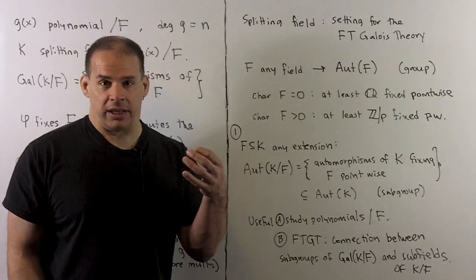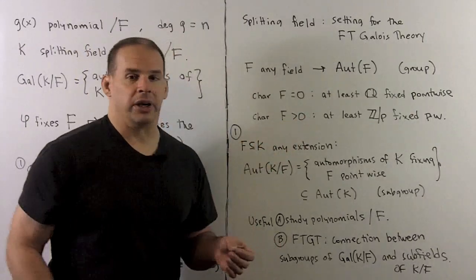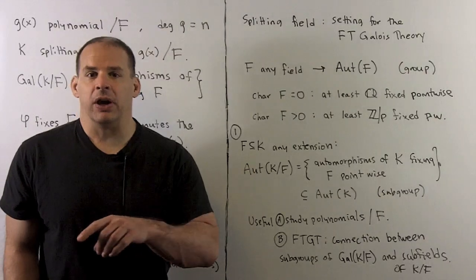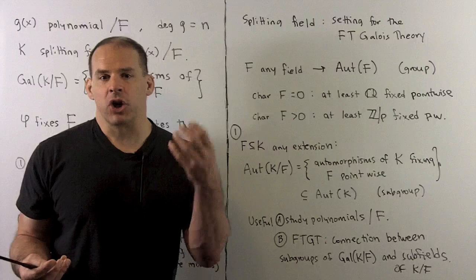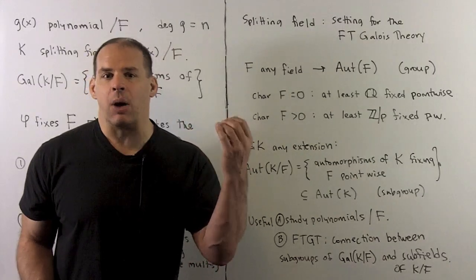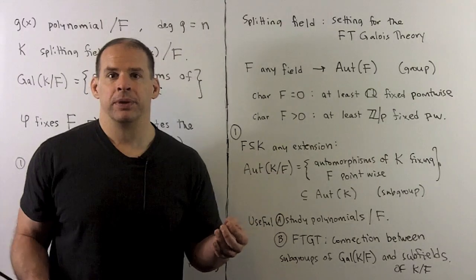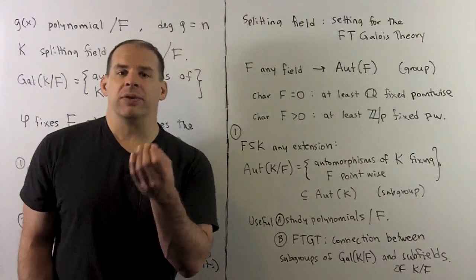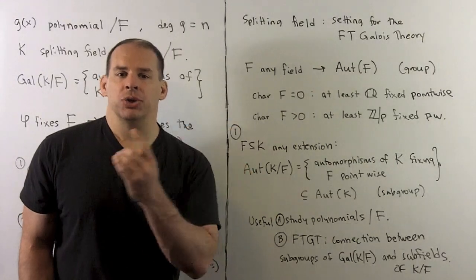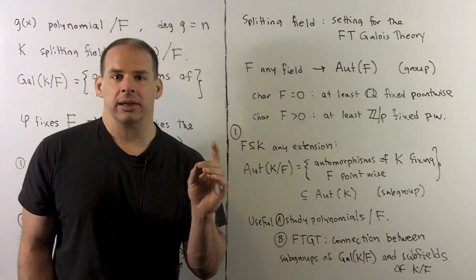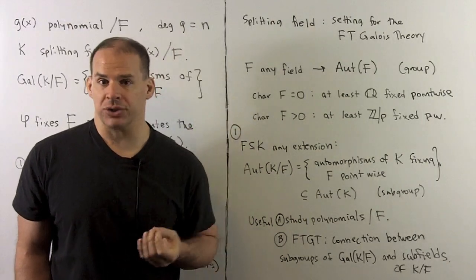Now, where is everything heading? Our ultimate goal is the fundamental theorem of Galois theory. The statement of the theorem is going to take place inside the splitting field of some polynomial. We're going to have a correspondence between subgroups of the Galois group and subfields of the splitting field extending F. So what we need for the theorem is the way we go from subgroups of the Galois group to subfields and back. We start by looking at automorphisms and subgroups of automorphisms.